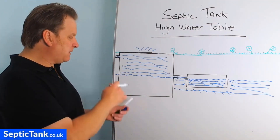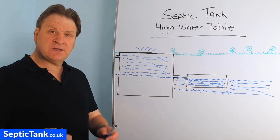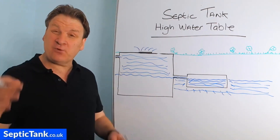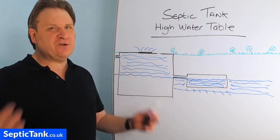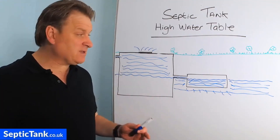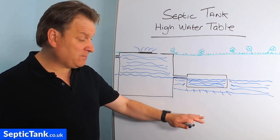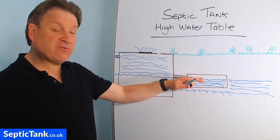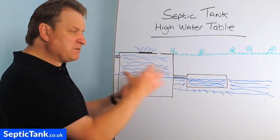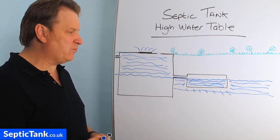This typically happens if you live in an area with a high water table, or if you're unfortunate enough that because it's rained a lot, the water table — which may have been lower at one time — rises in the winter. That's the problem associated with having a high water table.